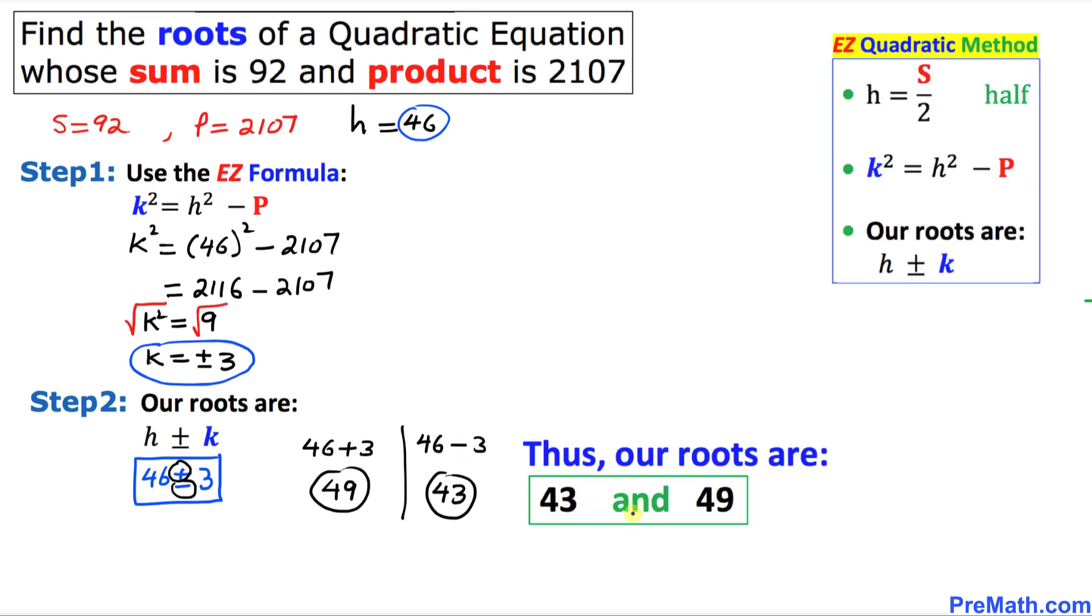Thus our roots turn out to be 43 and 49. If we add them we are going to get 92, and if we multiply them we are going to get 2107. Here are the steps that we performed in our calculations. Thanks for watching and please don't forget to subscribe to my channel for more exciting videos.